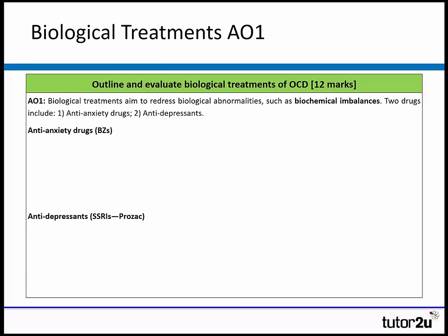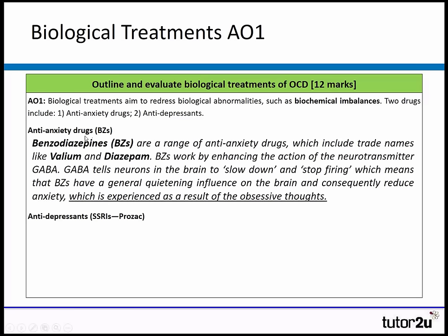The first and most complicated is benzodiazepines — a range of anti-anxiety drugs including trade names like Valium and diazepam. They work by enhancing the action of a neurotransmitter called GABA. GABA tells neurons in the brain to slow down and stop firing, which means benzodiazepines quiet the brain down a little, thereby reducing anxiety.